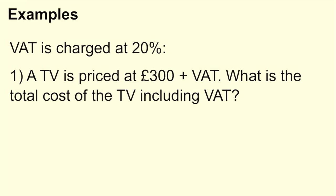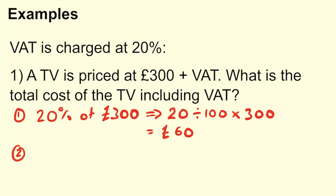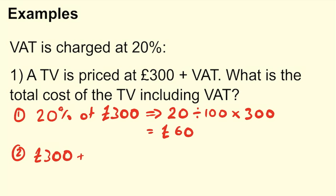We can rewrite this as: part one — find 20% of £300. Remember, 20% is the same as 20 divided by 100, and 'of' just means times, so times £300. Now we need to find the increase in VAT, so we're going to take the original amount, which is £300 — the cost of the TV — and add on our VAT of £60, which gives us £360.